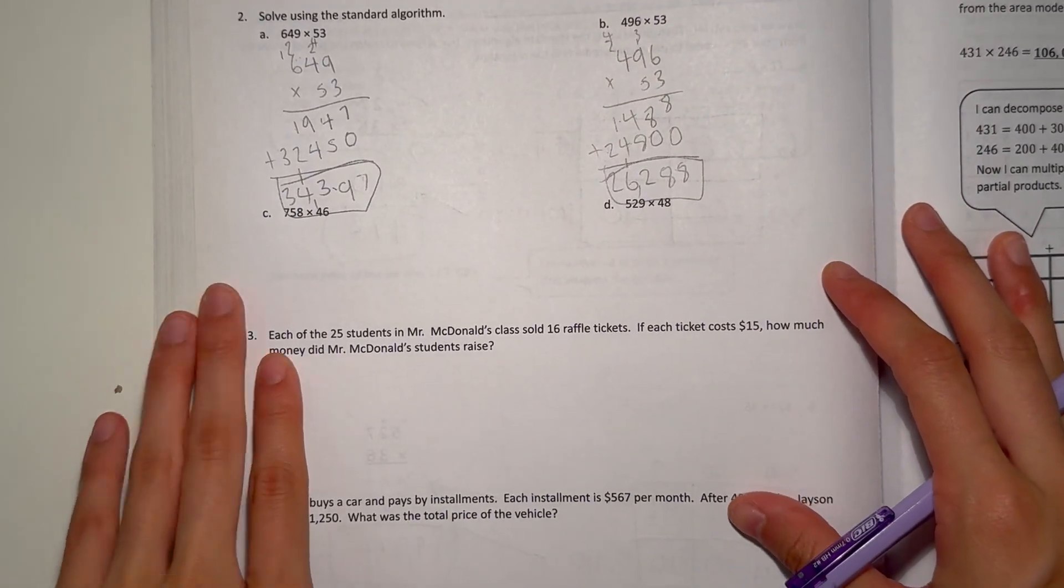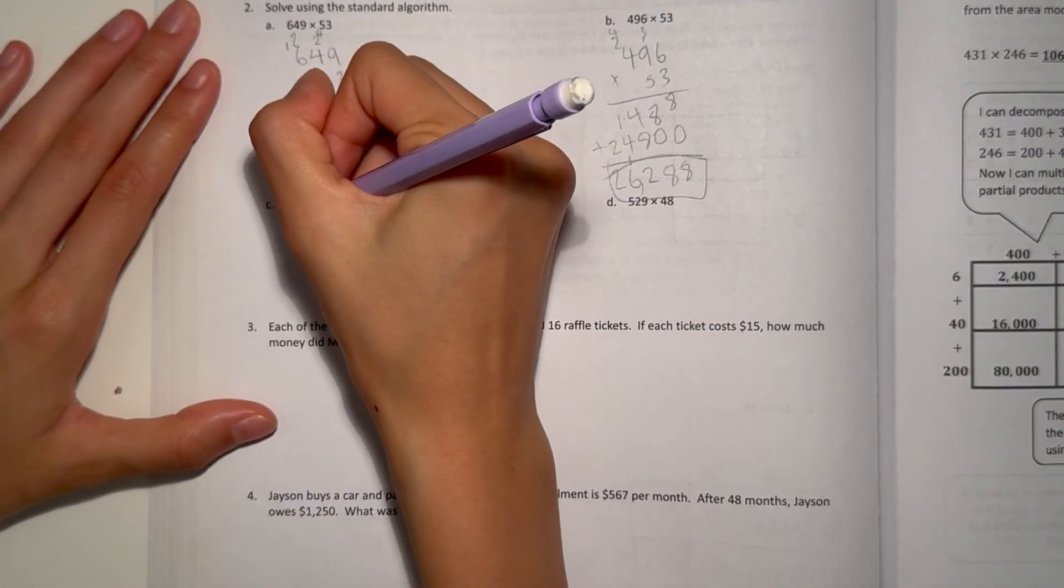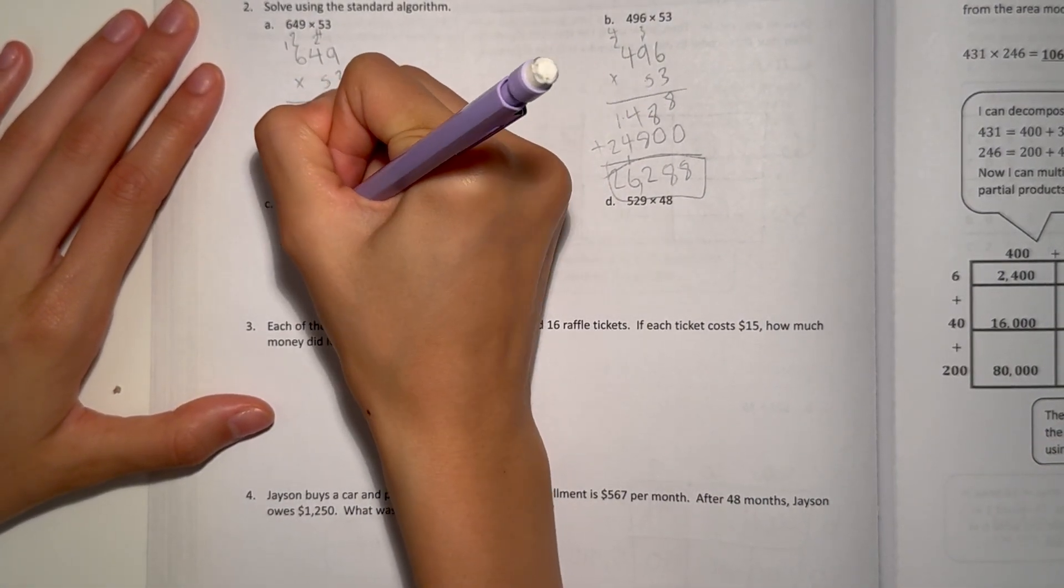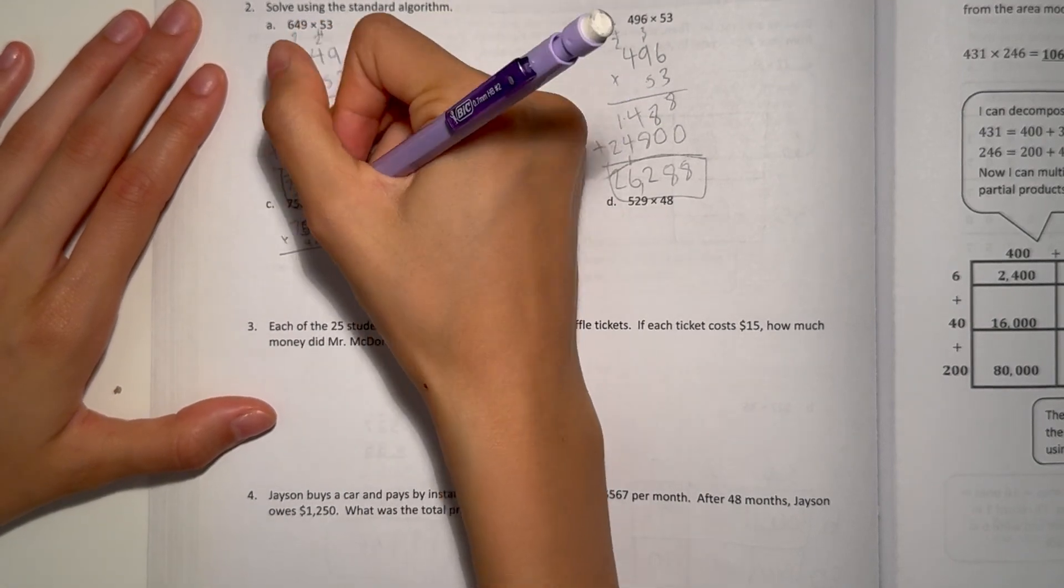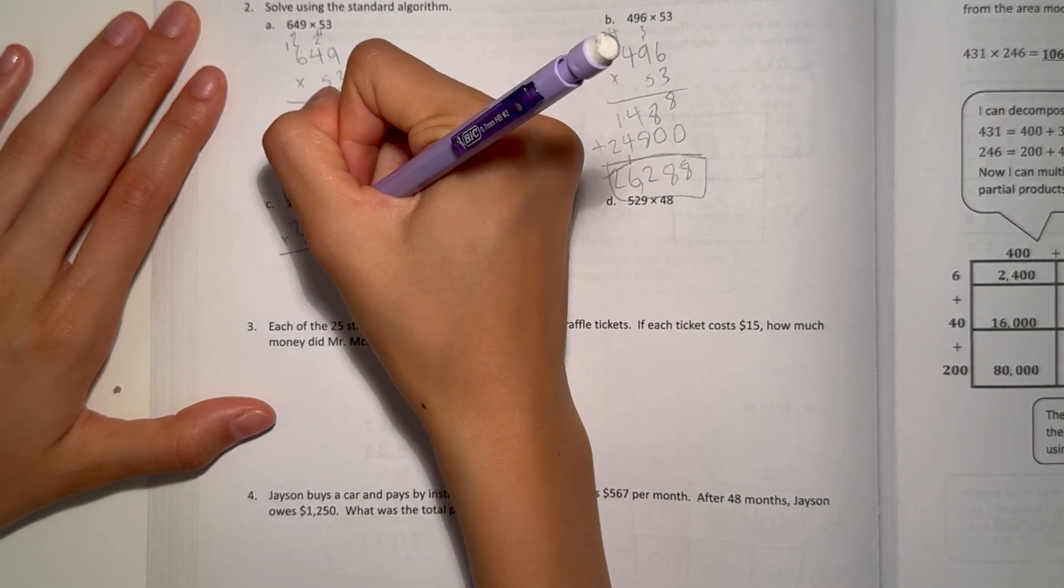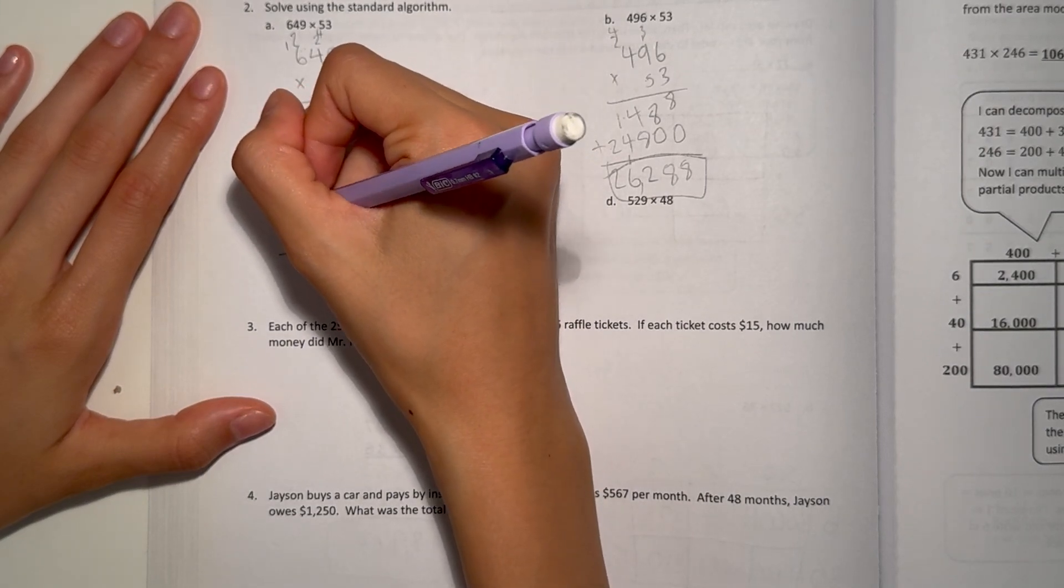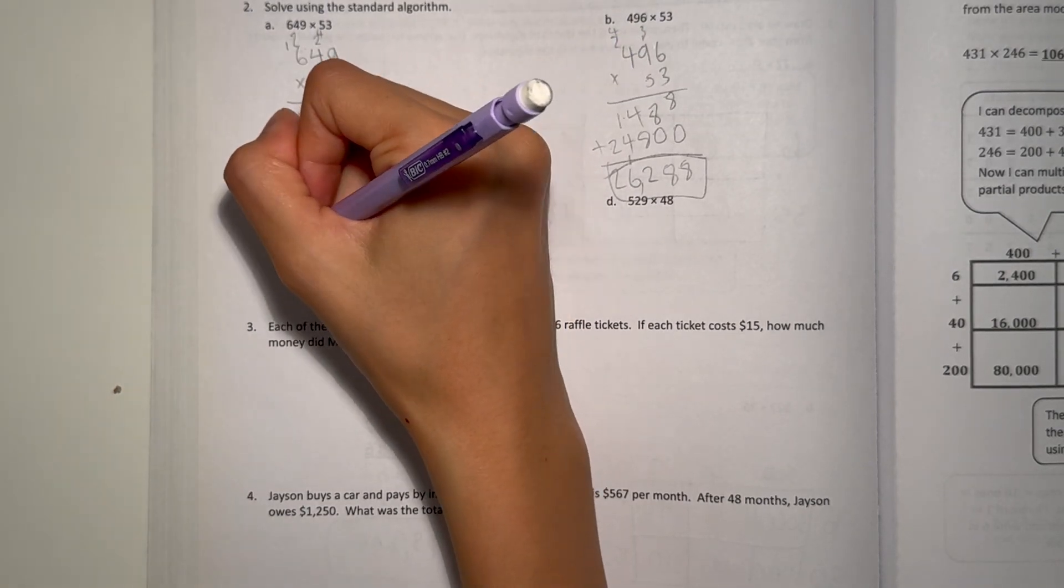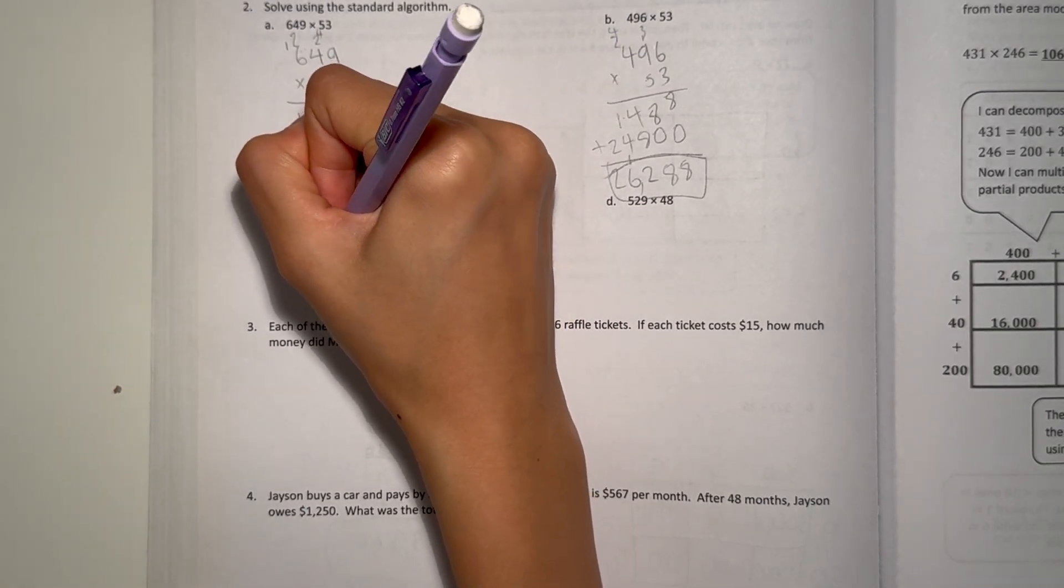Alright. Now let's look at C. 758 times 46. 8 times 6 is 48. 5 times 6 is 30. Plus 4 is 34. 7 times 6 is 42. Plus 3 is 45.